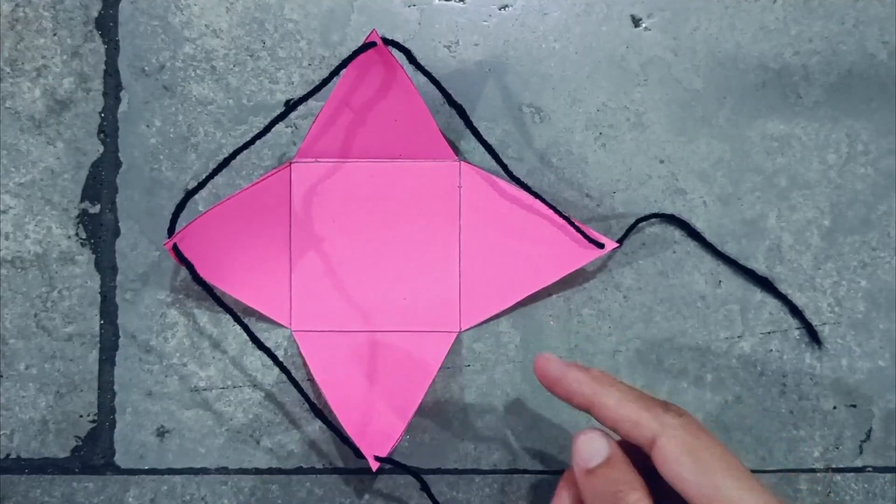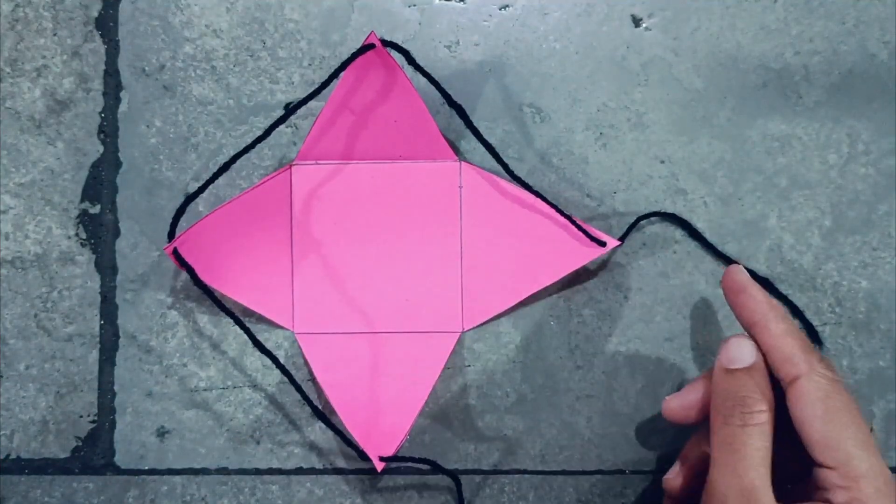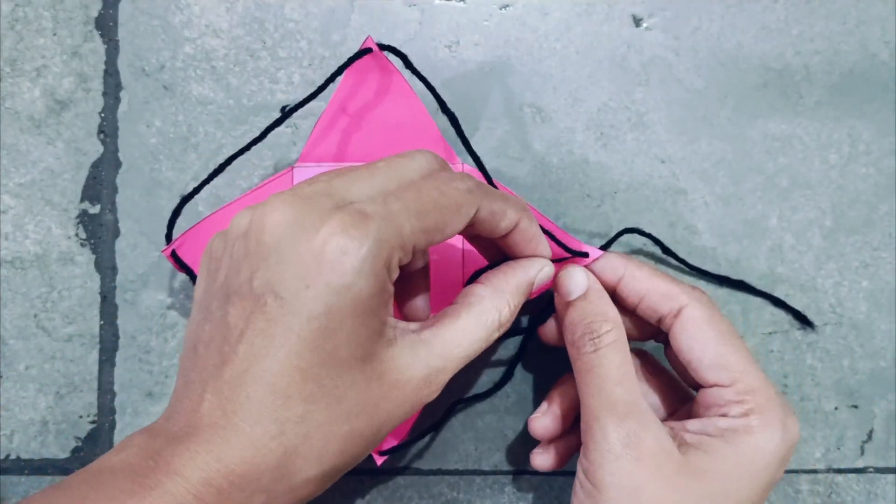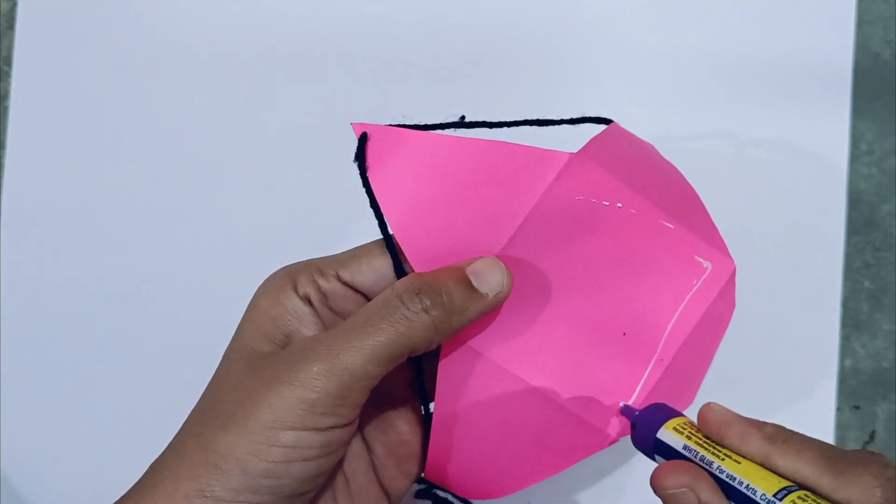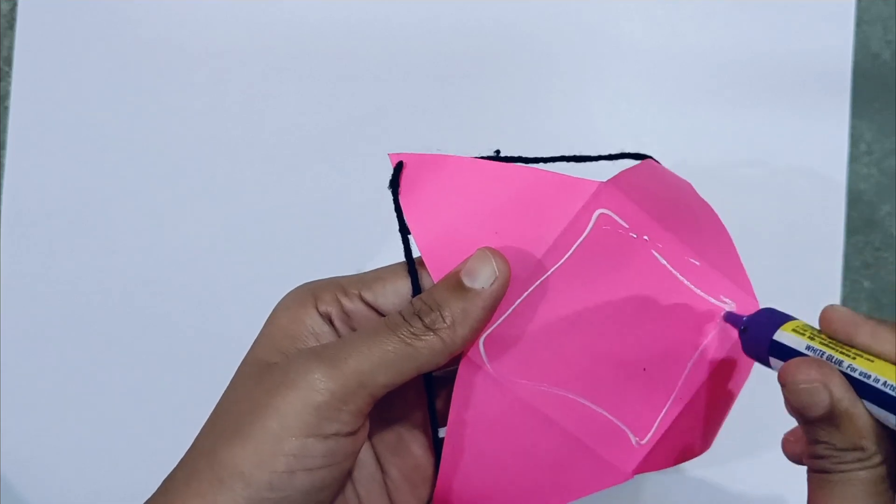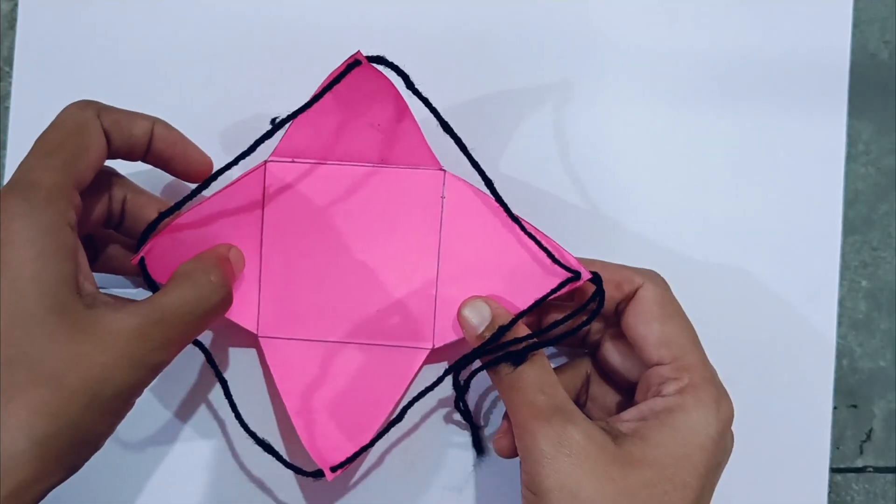In the last step, pass through from inside to outside the wool from the same hole. Now take a page, glue here, and stick here.